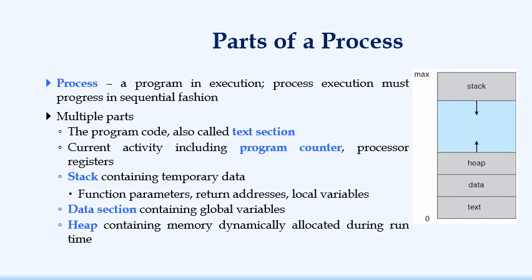There are different parts of a program which includes text section. Text section contains the set of codes of a program. Then it may include the program counter which stores what is the current instruction being executed and set of registers associated with the processes.